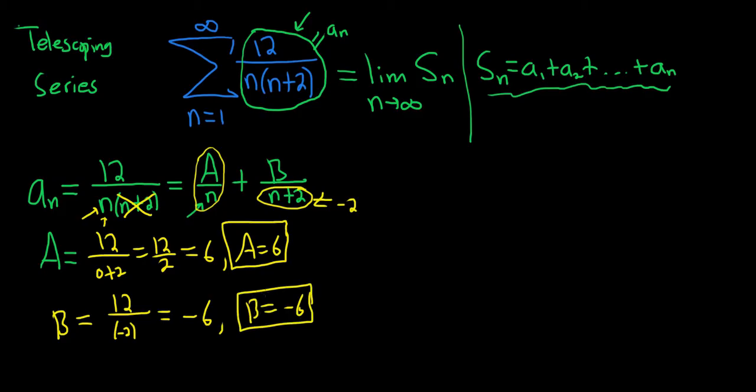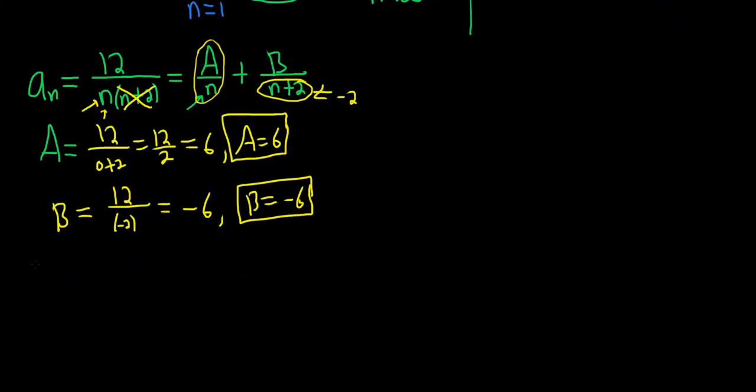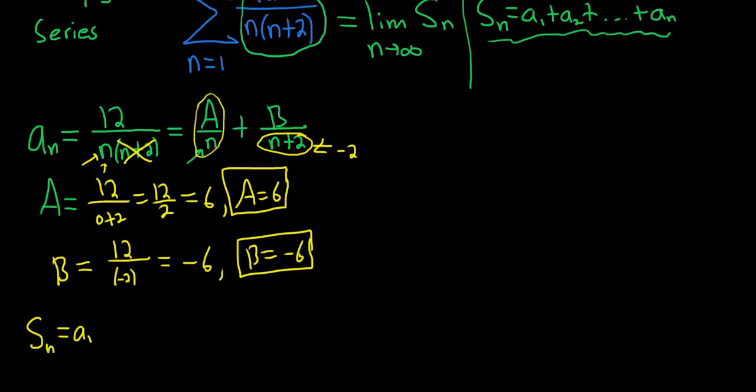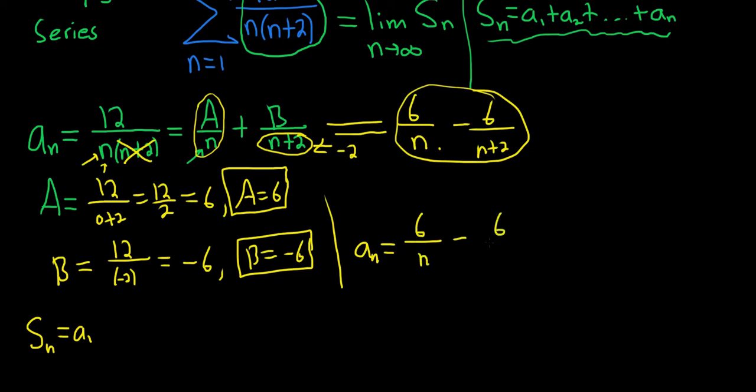Okay, so now we're going to write down s sub n and see what happens. So s sub n is equal to a sub 1. Oh, before I do that, let me go ahead and rewrite what we just did. So a here is 6. So it's 6 over n. And then b is negative 6. So minus 6 over n plus 2. So this is our new a sub n. In fact, I'm going to write it down again up here. So we have it in a convenient place. So it's 6 over n minus 6 over n plus 2. I'm going to put this in a box because we're going to reference it.